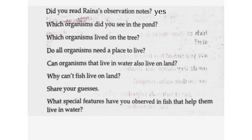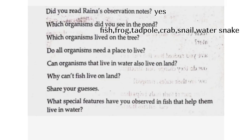Did you read Rhyna's observation notes? Yes. Which organisms did you see in the pond? Fish, frog, tadpole, crab, snail, water snake. Which organisms lived on the tree?